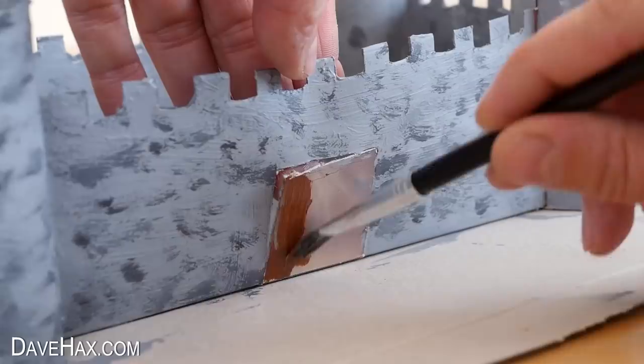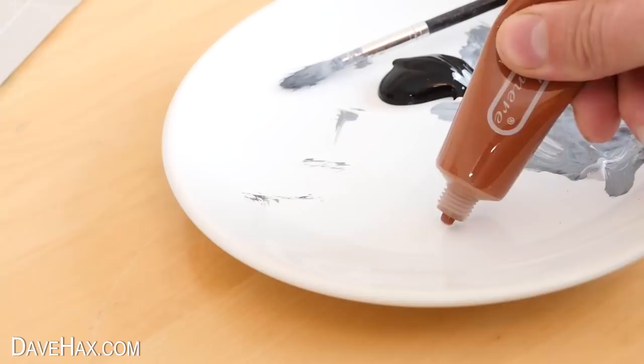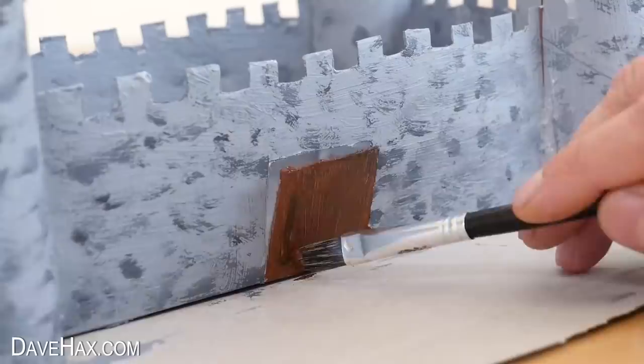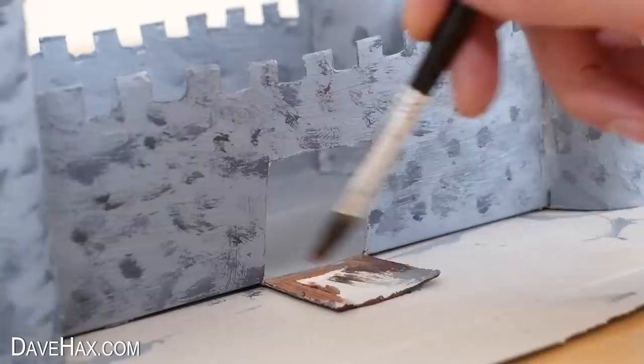For the drawbridge door, I'm using brown mixed with a bit of black to give a wood effect. I painted the outside and the inside. And I left it all to dry.